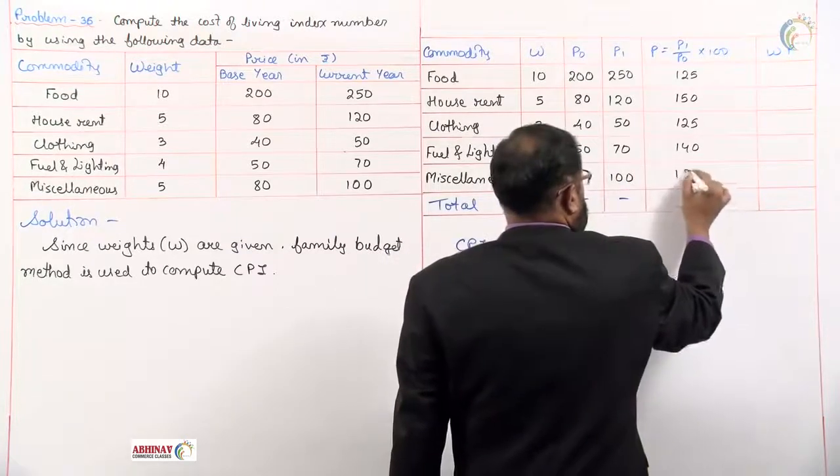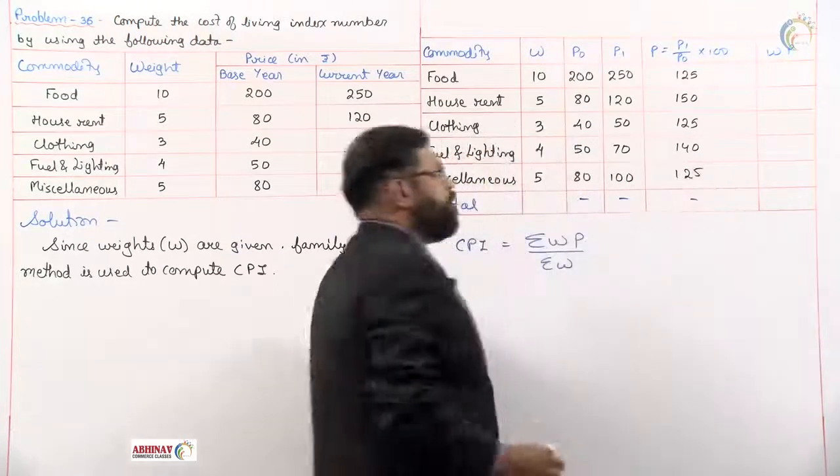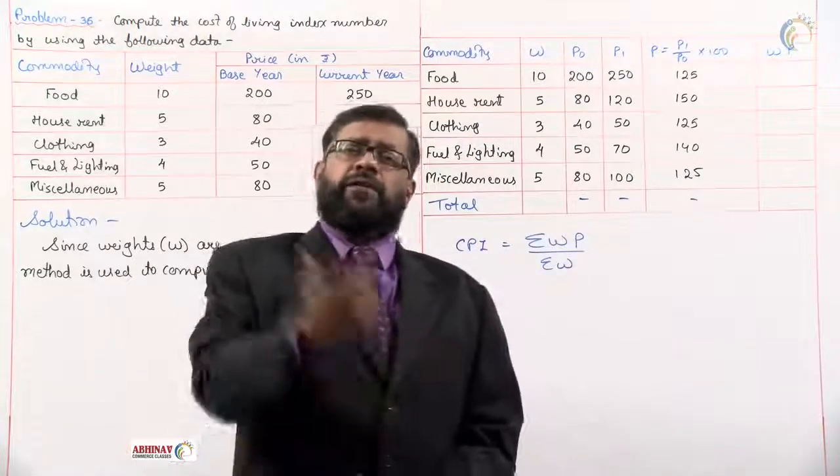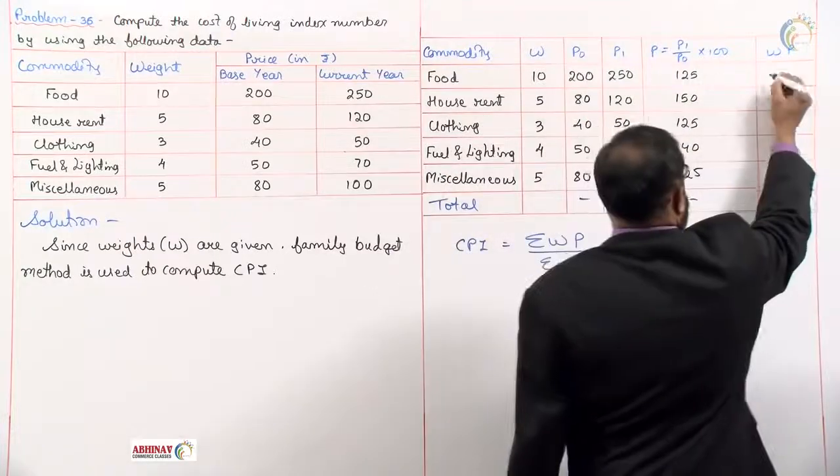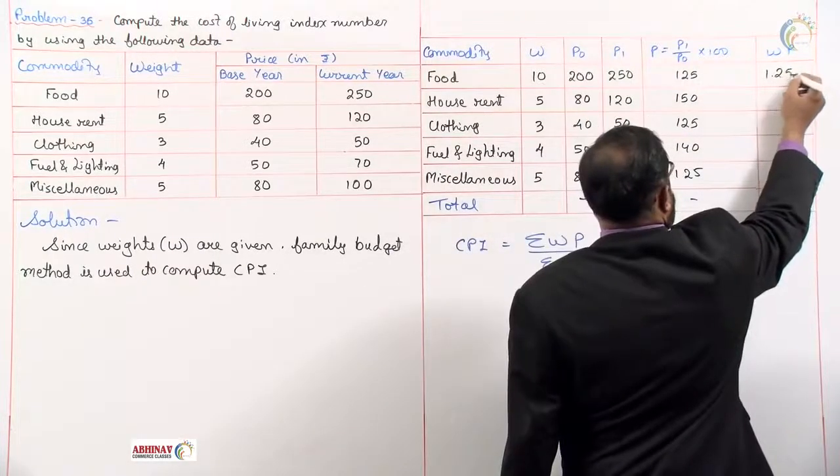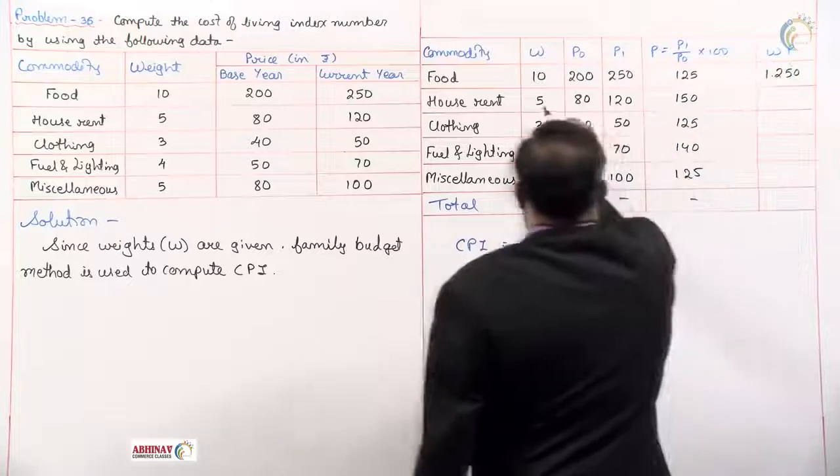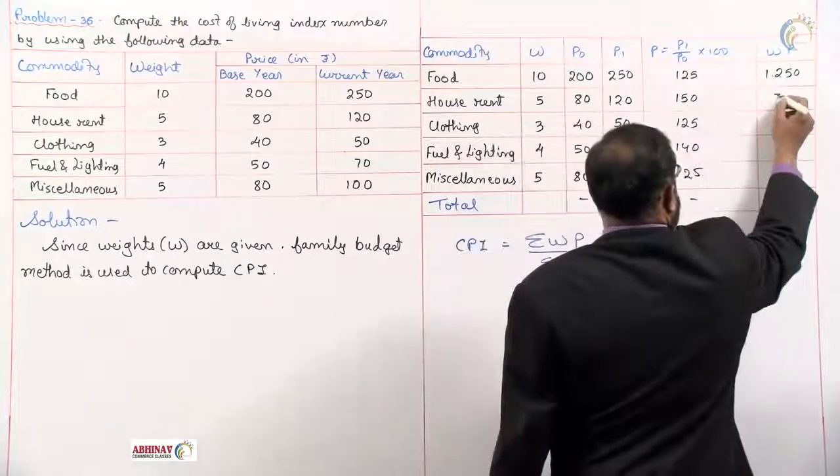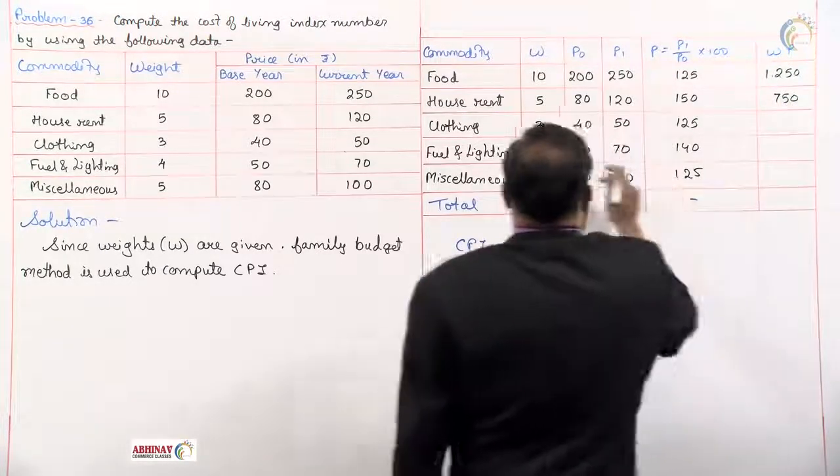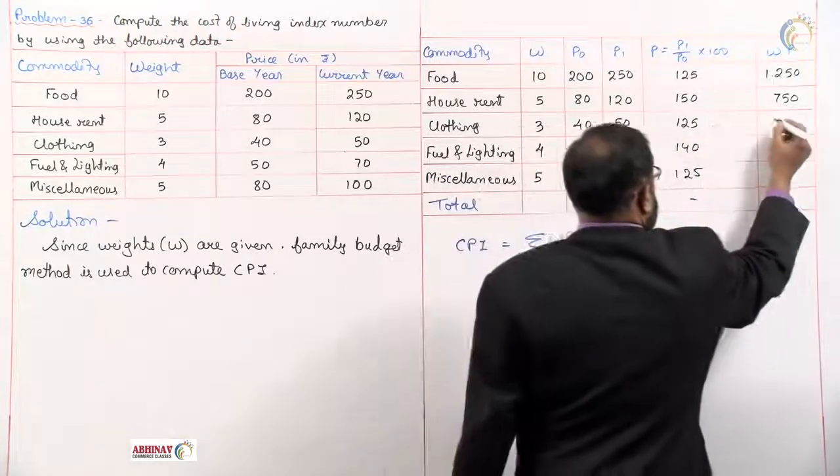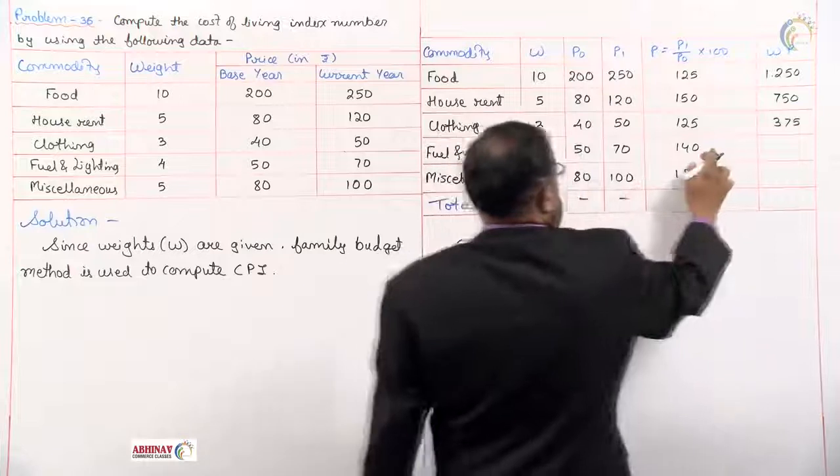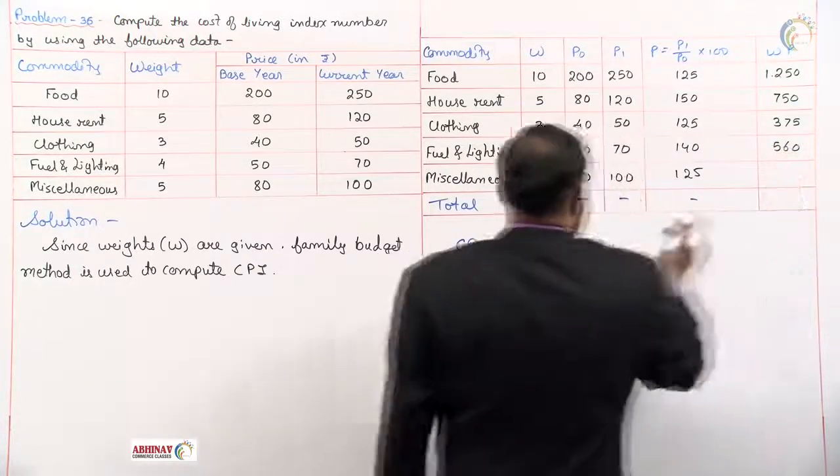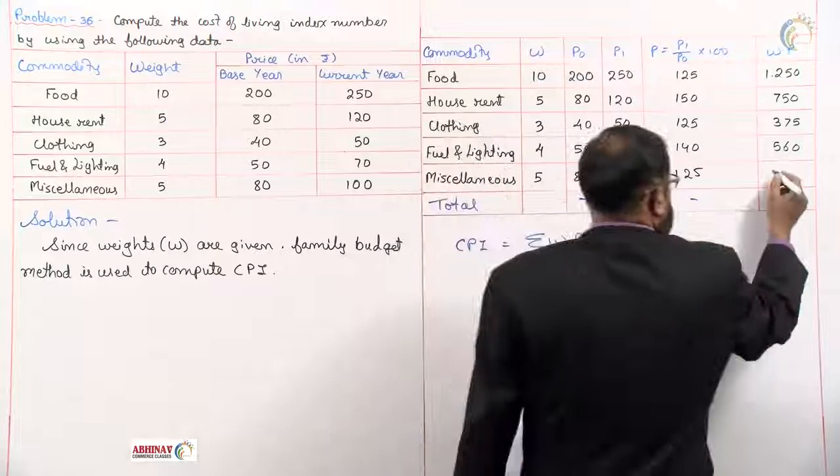Once we get the price relative, multiply these p values with your weights. 10 into 125 is 1250, 5 into 150 is 750, 3 into 125 is 375, 4 into 140 is 560, 5 into 125 is 625.